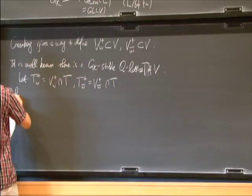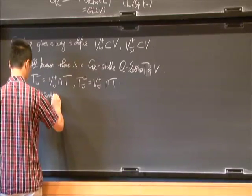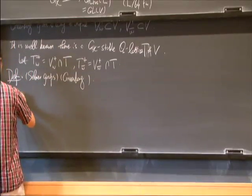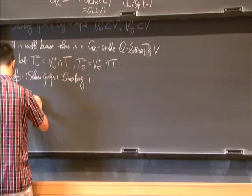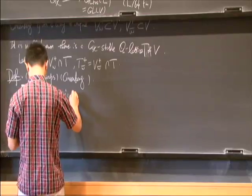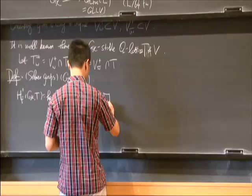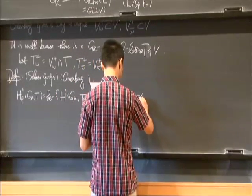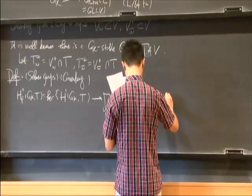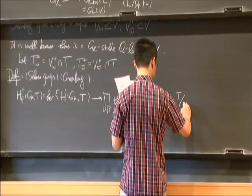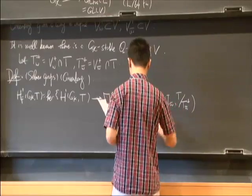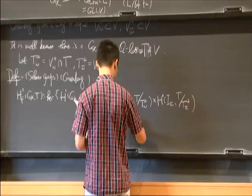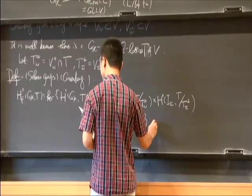Now we can define the Selmer group, which is due to Greenberg. The Selmer group, which we denote as H_F^1(G_K, T), is the kernel of the first Galois cohomology group of T into, for each V dividing P, we want H^1(I_W, T) over T_W^+ plus H^1(I_W-bar, T) over T_W-bar^+. We also require that at all other primes outside P the extension class is unramified.